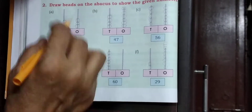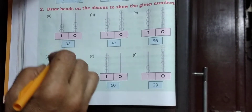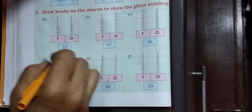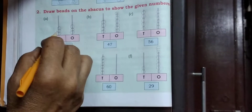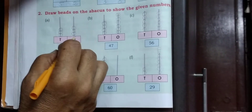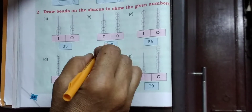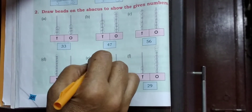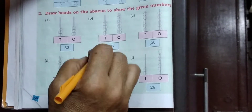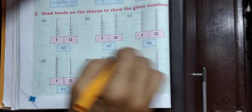Students, very, very carefully look at the page. 33: 3 tens, 3 ones. 47: 4 tens, 7 ones.